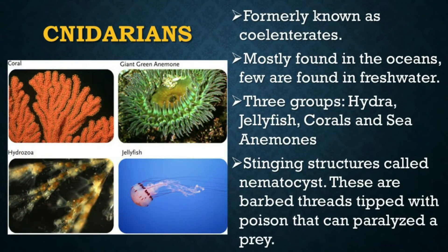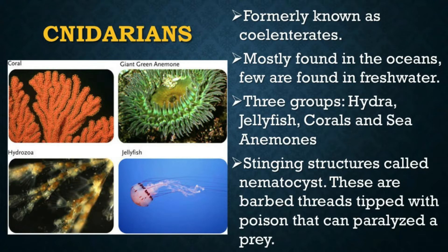Cnidarians are formerly known as coelenterates. There are over 10,000 kinds of these marine animals. They are mostly found in the oceans, no matter what depth or location, but few are found in fresh water. Cnidarians can be classified into three groups: hydra, jellyfish, corals, and sea animals. These animals have stinging structures called nematocysts — barbed threads tipped with poison, which are ejected like a dart to paralyze prey or to defend the cnidarian. This is why jellyfish stings are very painful and can even be fatal.